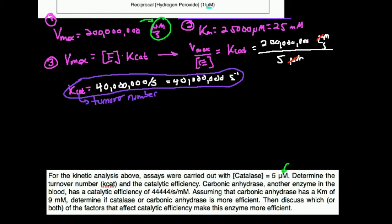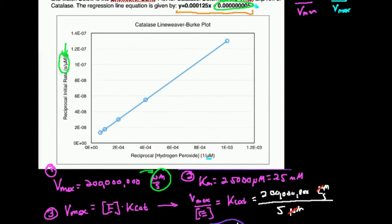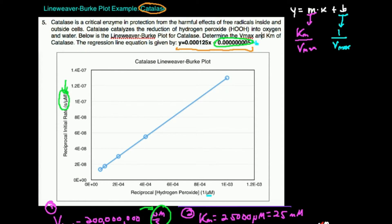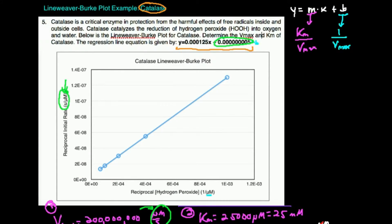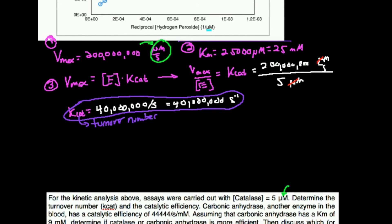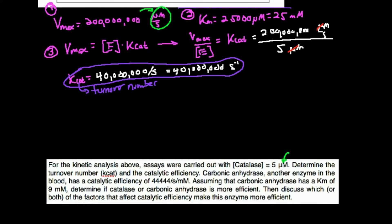The kcat for catalase is enormous. Catalase is the fastest enzyme known to man. One important thing: on test problems, you might see 40 million per second and say 'that's unreasonable, I did something wrong.' Not necessarily. If you know you did the math right, trust yourself. These kcats can range a lot, and 40 million per second is the highest you'll find — but this is correct. It's based on real data; this is the actual kcat of catalase.